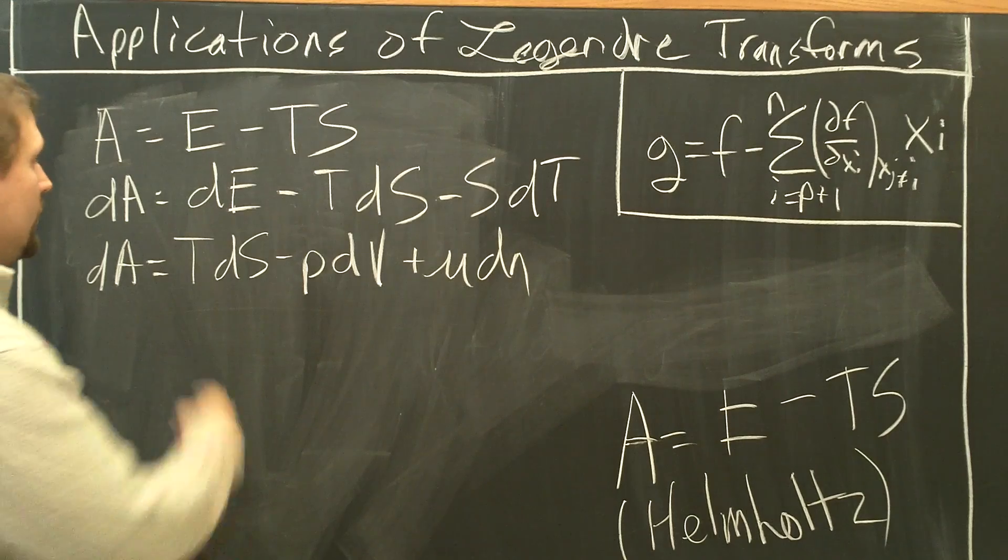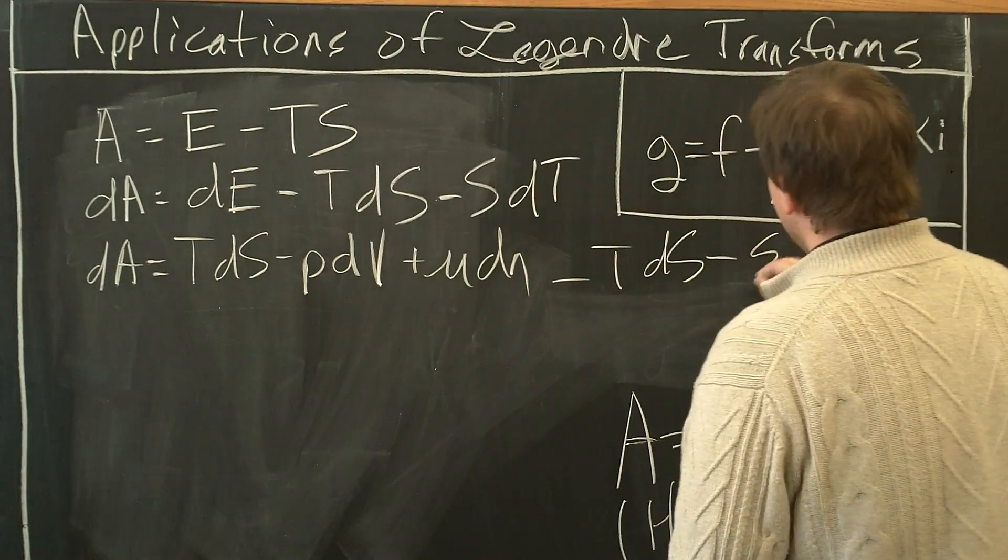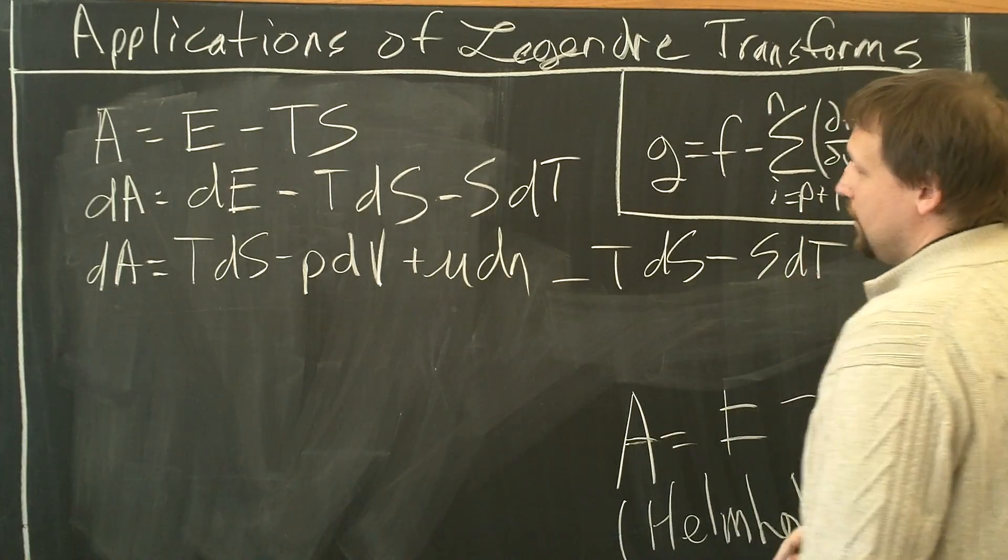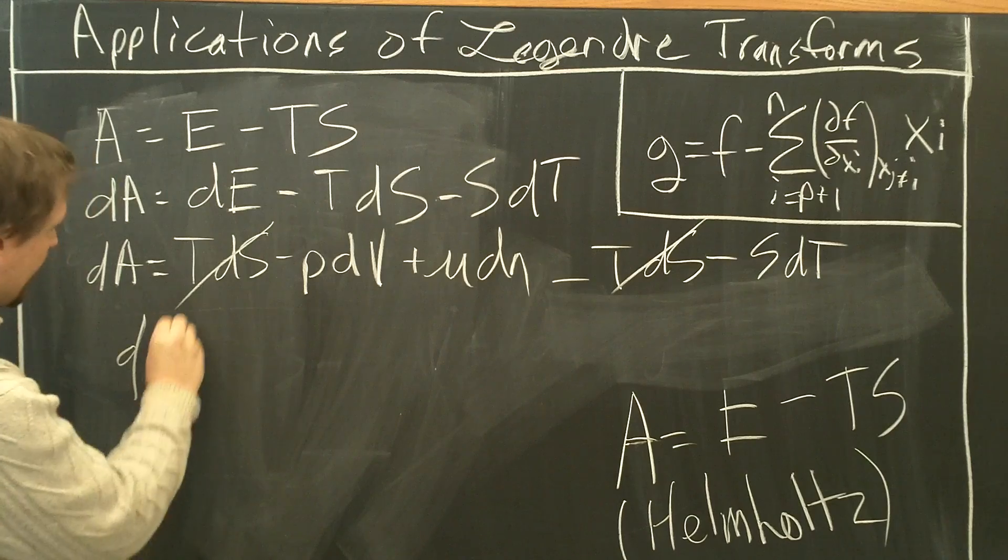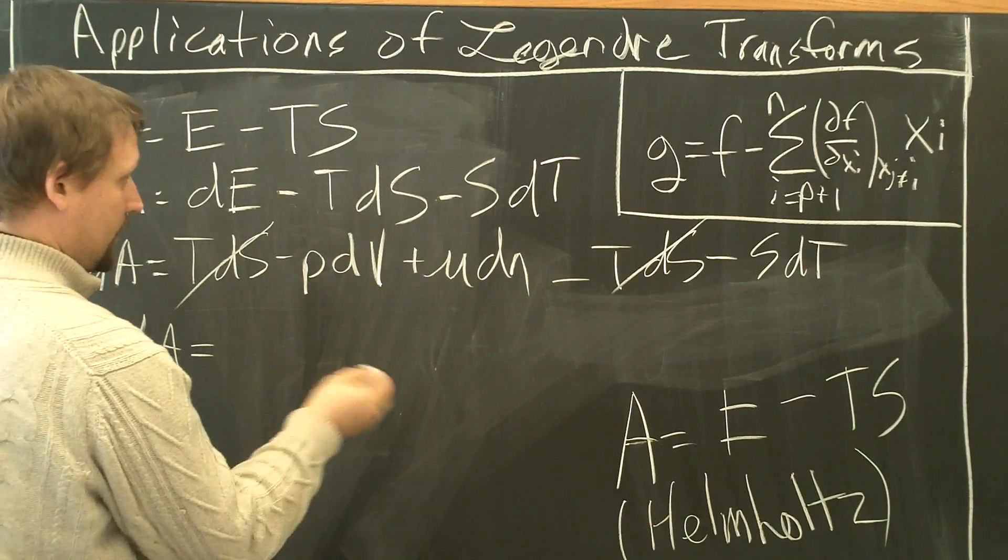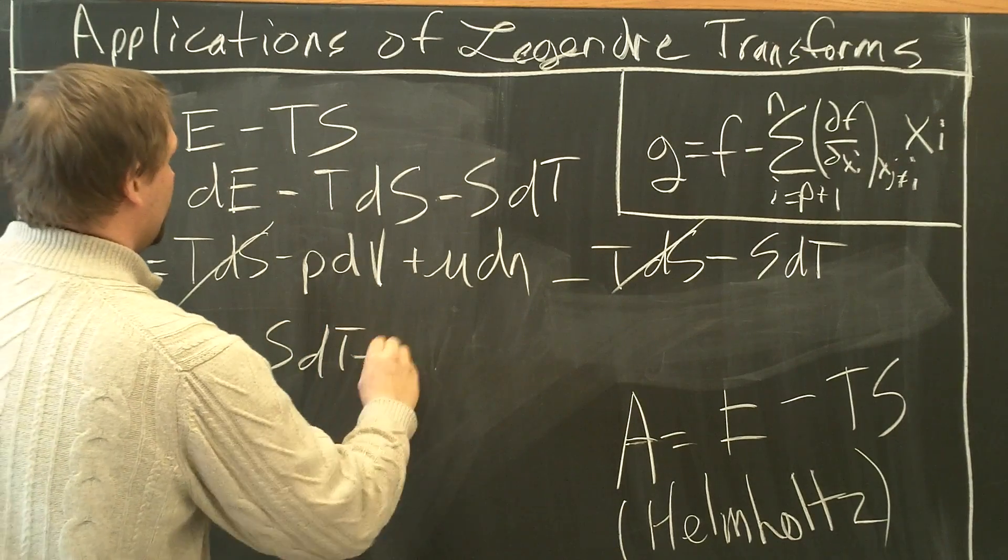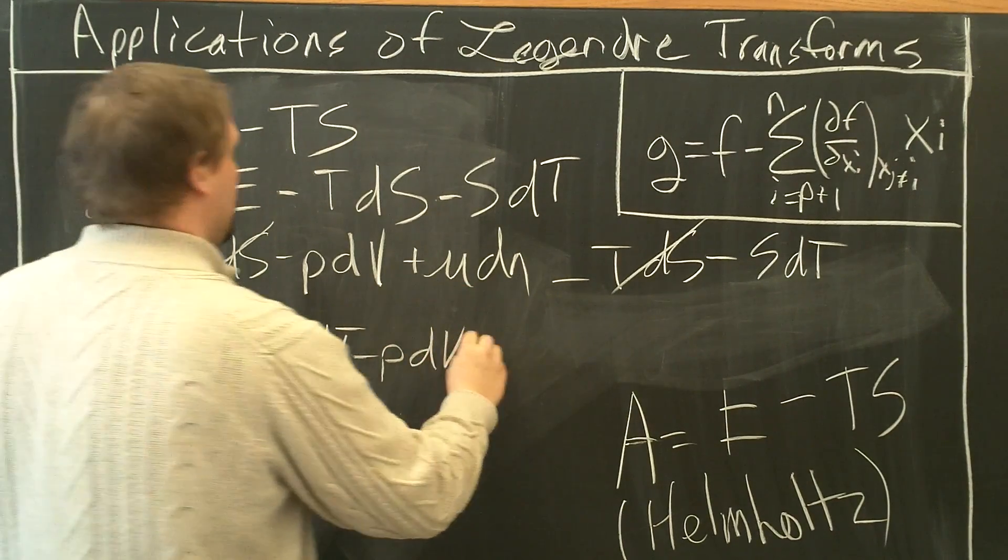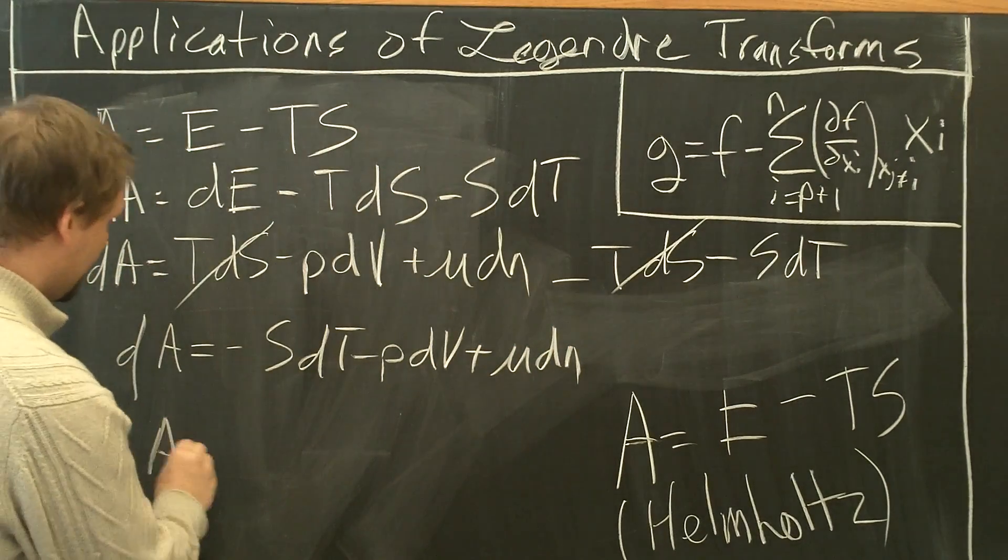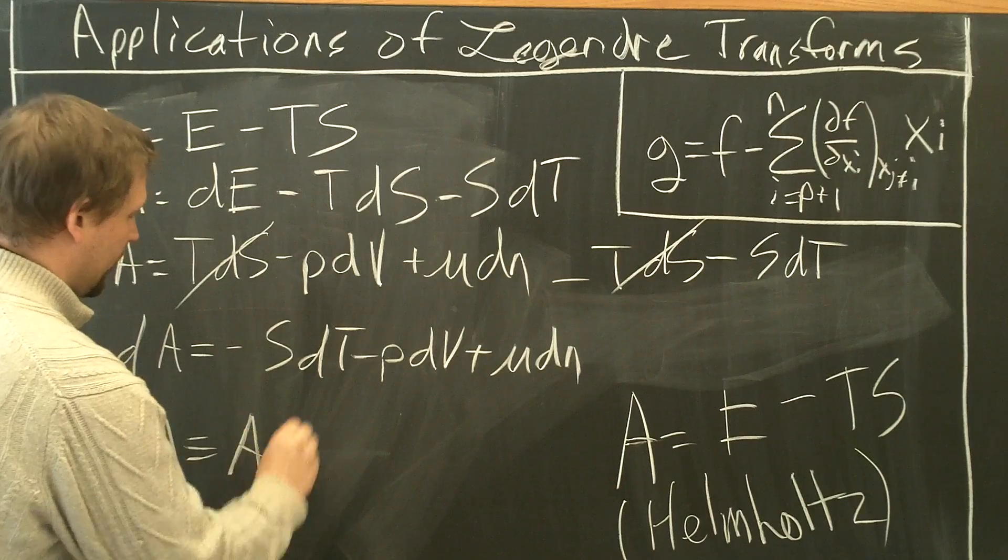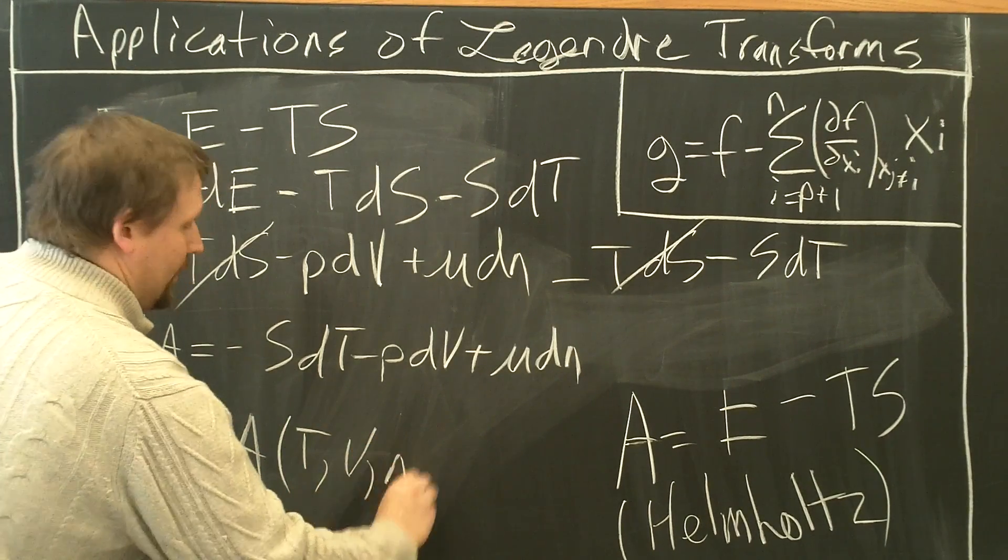minus TdS minus SdT. TdS's cancel out, and we're left with dA equals minus SdT minus PdV plus μdN. And so,